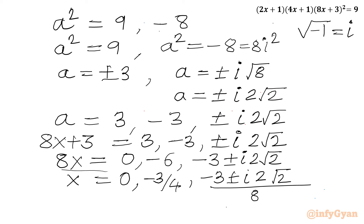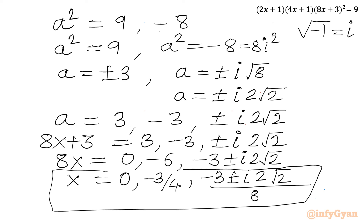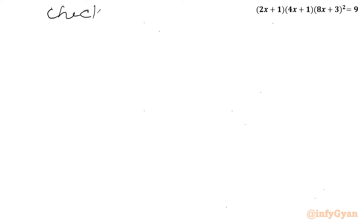This is our ultimate and final answer. Let us cross-check the two real values: x = 0 and x = −3/4.